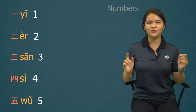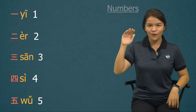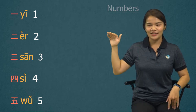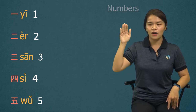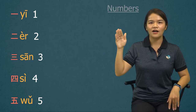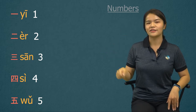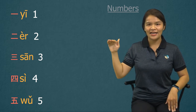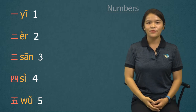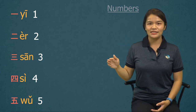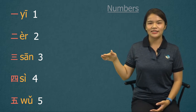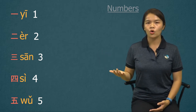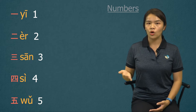So let's repeat number one to five. Number one: 一, 一, 一. Number two: 二, 二, 二. Number three: 三, 三, 三. Number four: 四, 四, 四. Number five: 五, 五, 五.